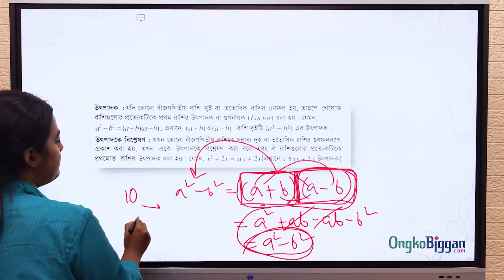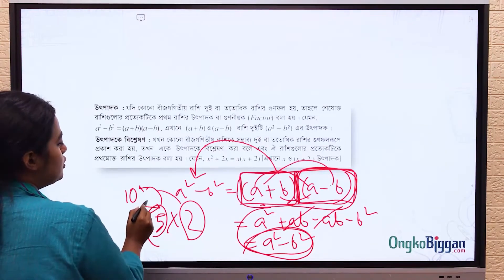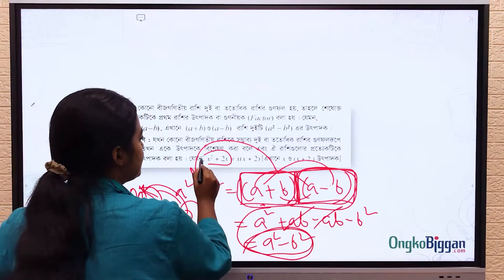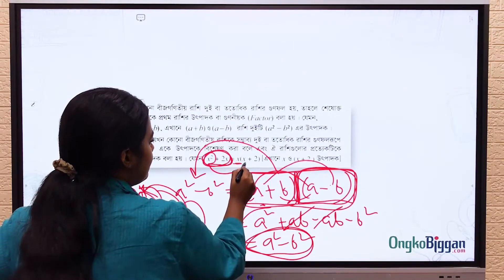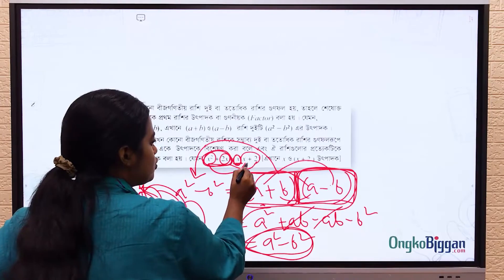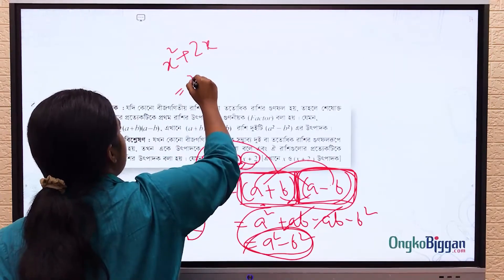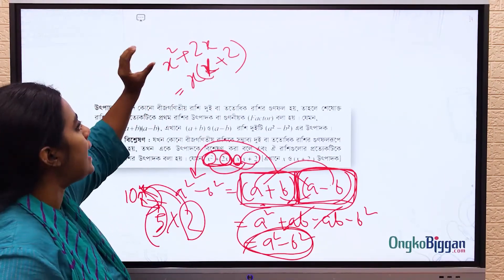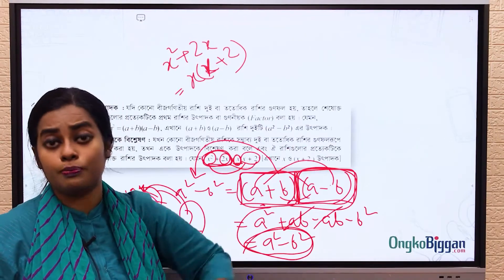For example, we said 10 can be written as 5 into 2 — expressed as a product of two numbers. Similarly, look here: x squared plus 2x. If we take x common, the first term gives x and the second term gives 2. So x squared plus 2x can be written as x into (x plus 2) — one expression broken into two factor expressions.